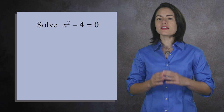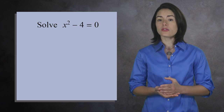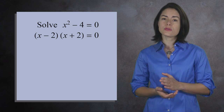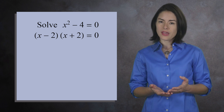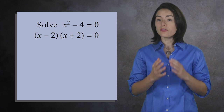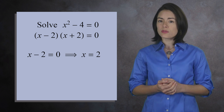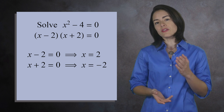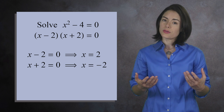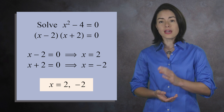Suppose you want to solve the equation x squared minus 4 equals 0. In regular algebra, you would factor the left-hand side, giving you x minus 2 times x plus 2 equals 0. Here, the product of two terms is 0, so one of the terms must be 0. If x minus 2 equals 0, then x equals 2. And if x plus 2 equals 0, then x equals negative 2. So this equation has two solutions: 2 and negative 2.